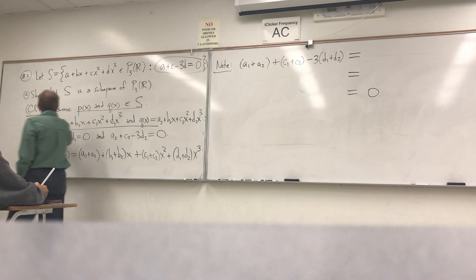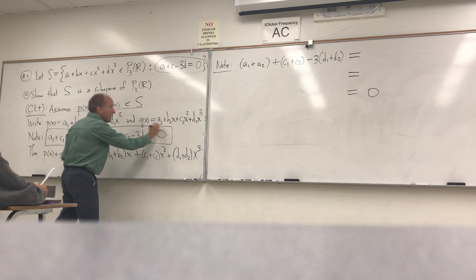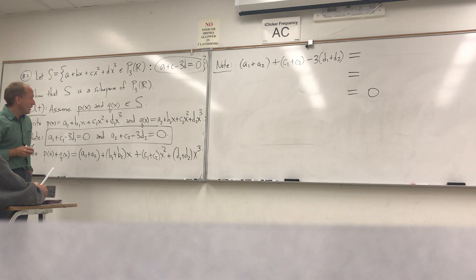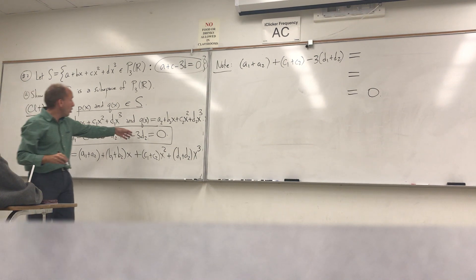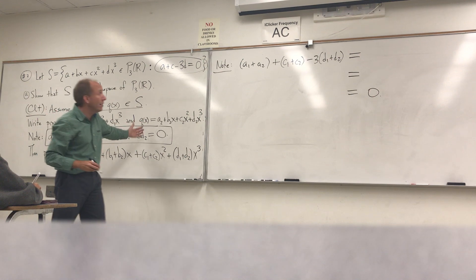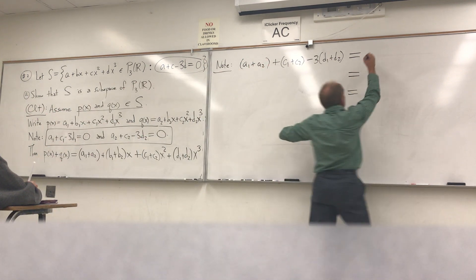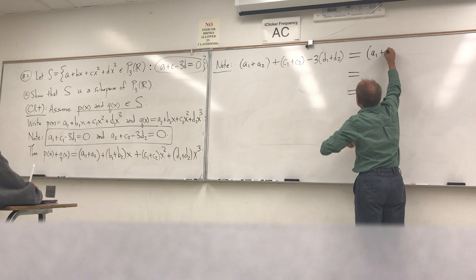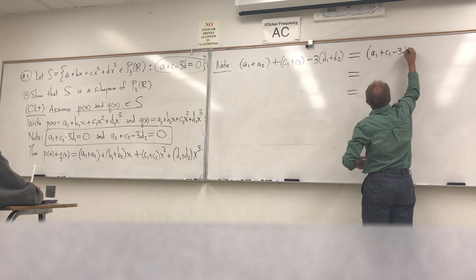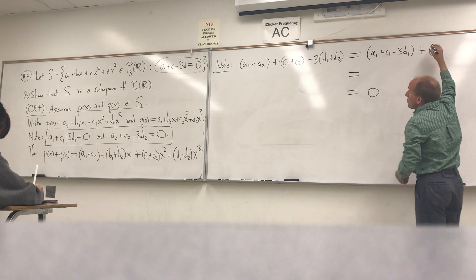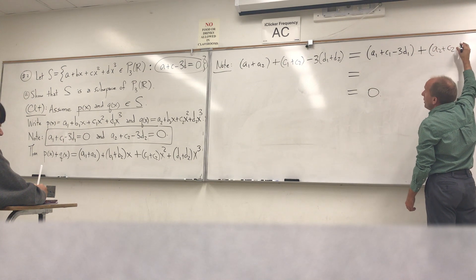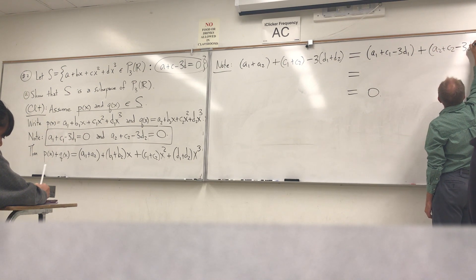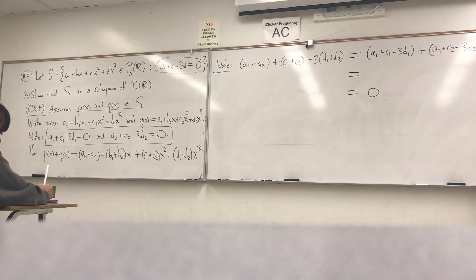Very good. We have some conditions that we already know about. This is exactly right. I'm going to put all of the 1 subscripts together and then all of the 2 subscripts together. So I'm going to reorganize this. I'm going to put the a1 and the c1 and the minus 3d1 together. And I'm also going to put parentheses around the a2, the c2, and the minus 3d2.